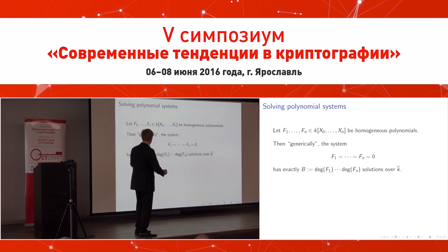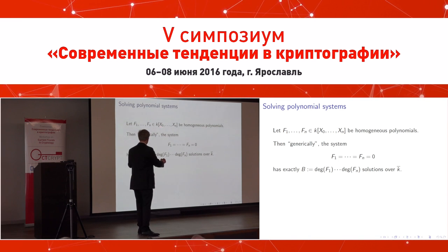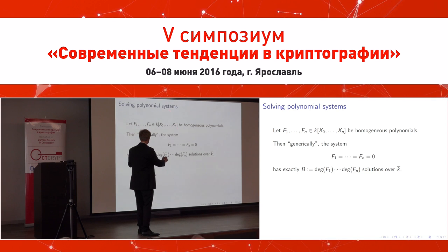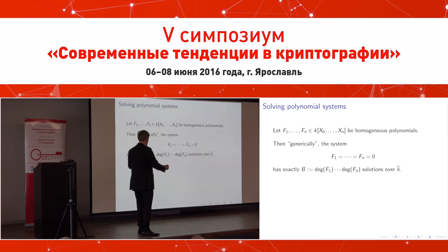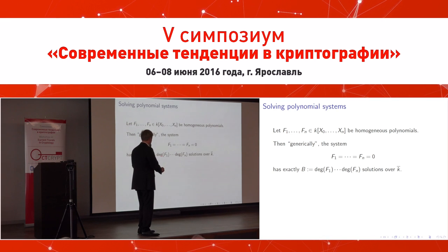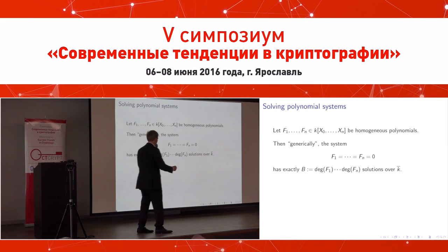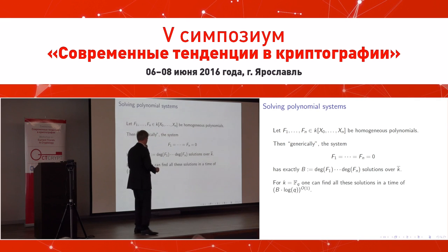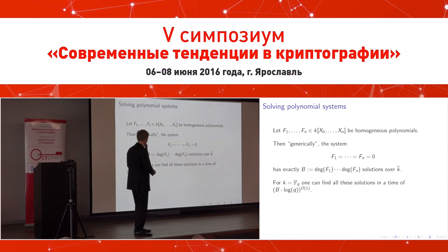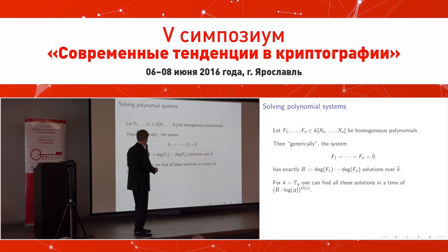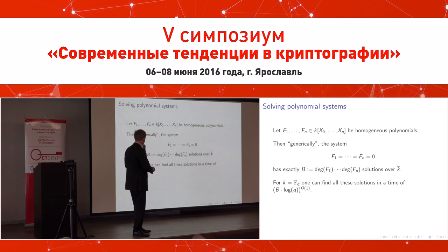Let's consider the most important problem: solving these polynomial systems. The easiest case is n+1 variables and n equations. Geometry says the number of solutions is given by multiplying the degrees of the equations — over the algebraic closure. There are algorithms which can compute all these solutions in time polynomial in the number of solutions, and over finite fields that can be done with a randomized algorithm.